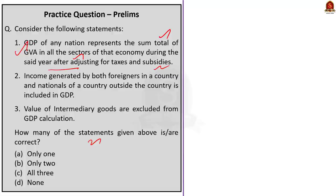Income generated by foreigners in a country is included in GDP, but income generated by nationals outside the country is not included — this income is called remittance and forms part of income from abroad. If this income from abroad is added to GDP it becomes Gross National Product, not Gross Domestic Product. Statement three: value of intermediary goods are excluded from GDP calculation — this statement is correct, done to avoid double counting. So statements one and three are correct, and the answer is option B: only two.